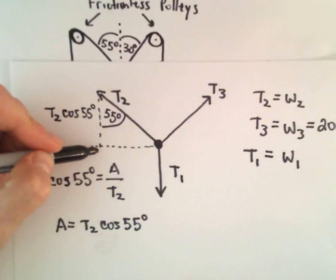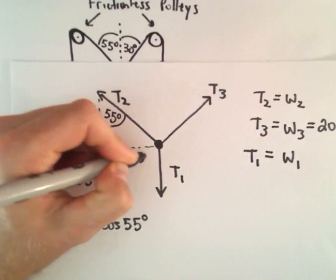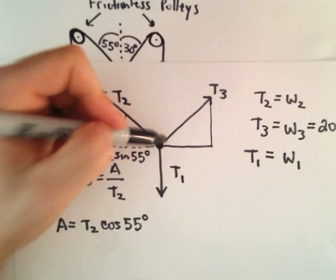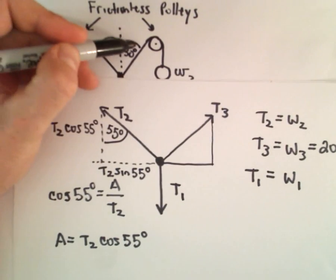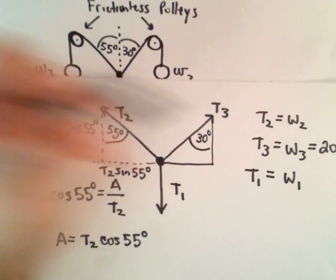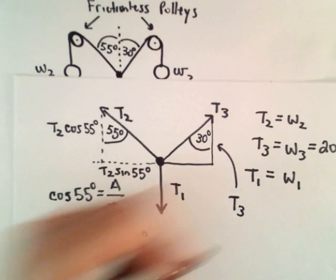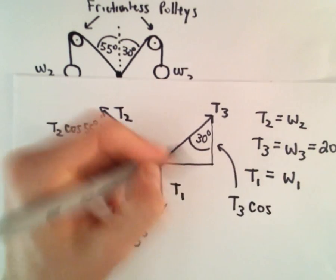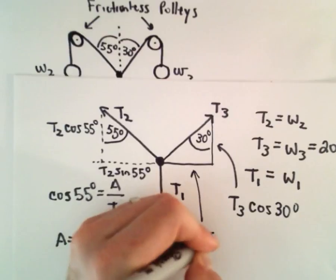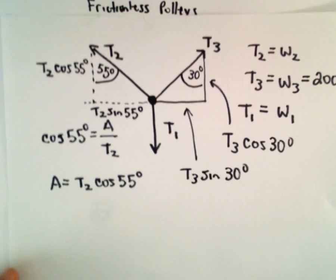Likewise, the horizontal component, for the horizontal component, that would have value T2 times sine of 55 degrees. And then we can do the same thing for our other triangle. So the angle was 30 degrees. So we can conclude that this angle will be 30 degrees. Likewise, the vertical component will be T3 times cosine of 30 degrees. And then our horizontal component is just going to be T3 times sine of 30 degrees.